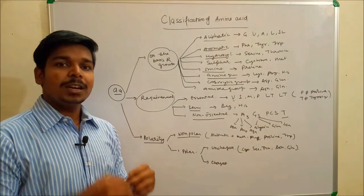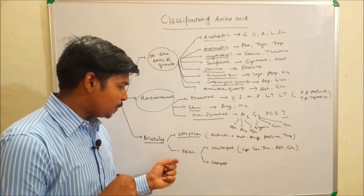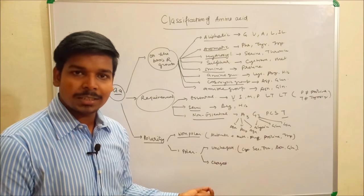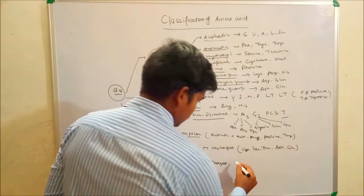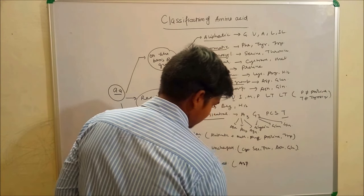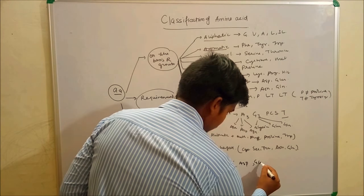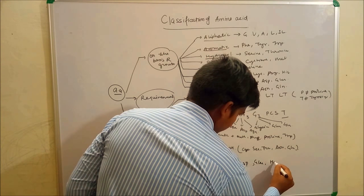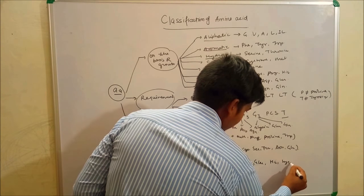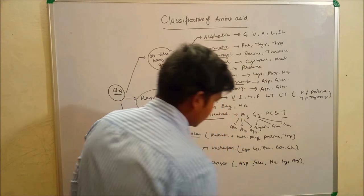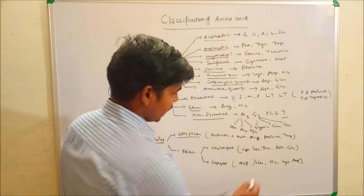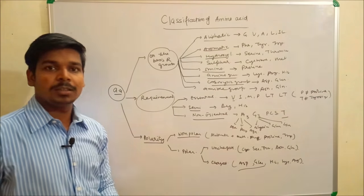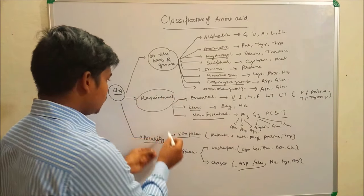Polar and charged amino acids include: aspartate and glutamate (which are acidic amino acids), and histidine, lysine, and arginine (which are basic amino acids).